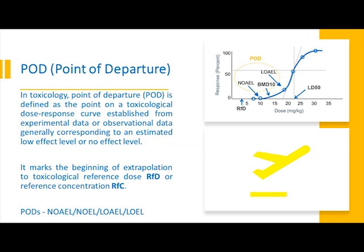Let us see what is POD — point of departure. In toxicology, point of departure (POD) is defined as the point on a toxicological dose-response curve, established from experimental data or observational data, generally corresponding to an estimated low effect level or no effect level. It marks the beginning of extrapolation to toxicological reference dose (RfD) or reference concentration (RfC). PODs include NOAEL, NOEL, ATLOAEL, or LOEL. To know more about NOAEL, please go through module 7 of the general toxicology series. Therefore, identifying the appropriate PODs is very important in deriving the correct permissible daily exposure limit of a substance, hence only experienced toxicologists are allowed to derive these limits.